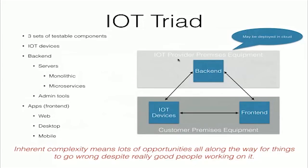The back end is running on IoT provider premises equipment, maybe deployed in the cloud, maybe on physical hardware. And all the rest — the IoT devices and the front end — is running on customer premises equipment, which means it's out of your physical control. Because all of these things are talking to each other, you have a lot of inherent complexity, which means lots of opportunities for things to go wrong, despite having really good people working on it. Good staff doesn't mean you don't do testing.